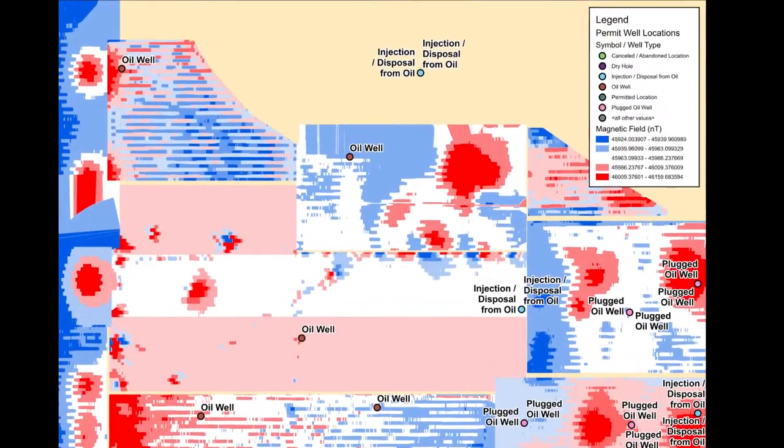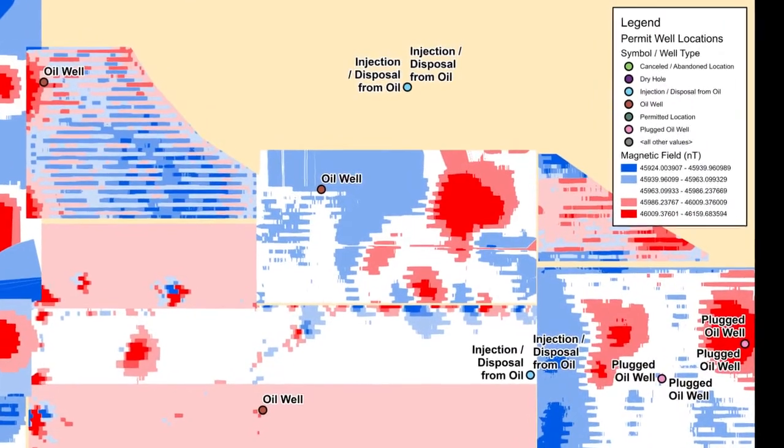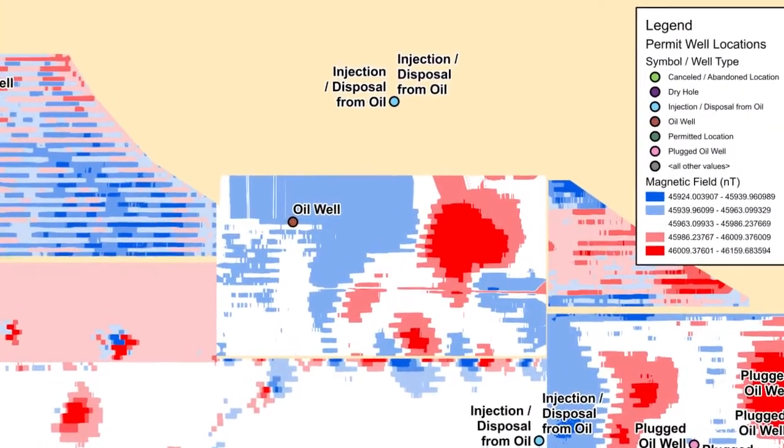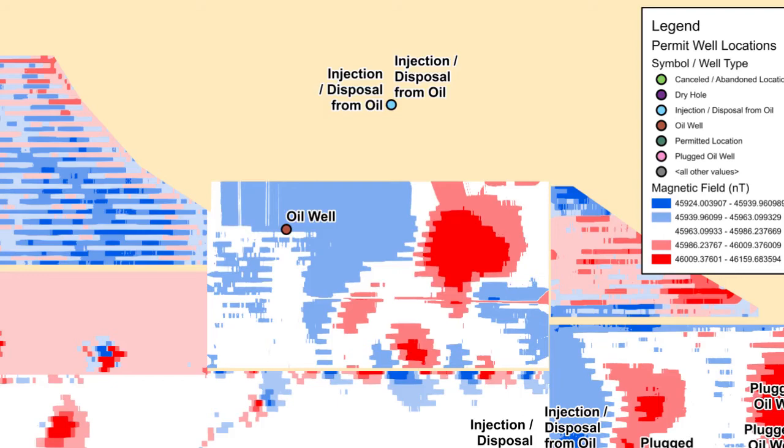After processing, the data was imported into SURFER to view individual survey results and into GIS software to prepare magnetic maps for the well locations.